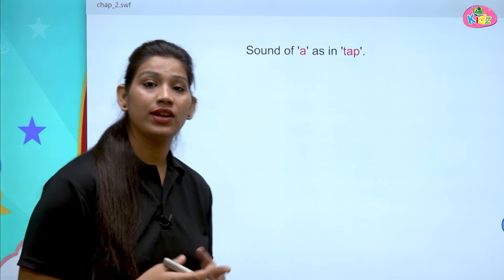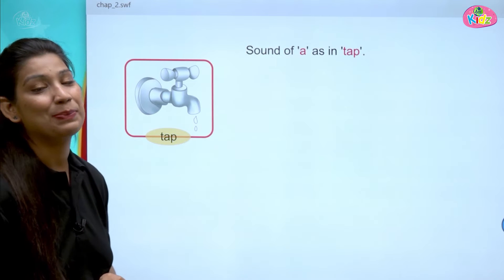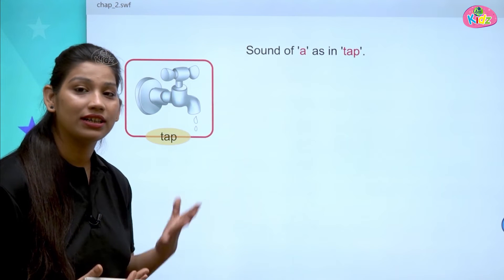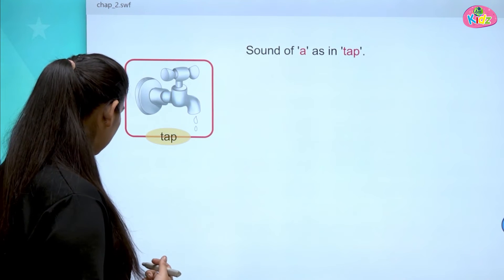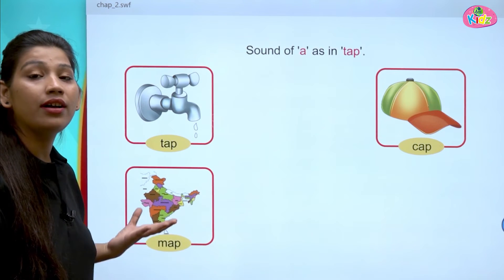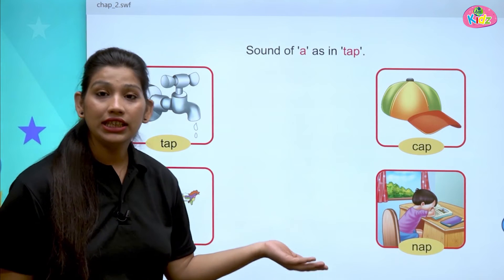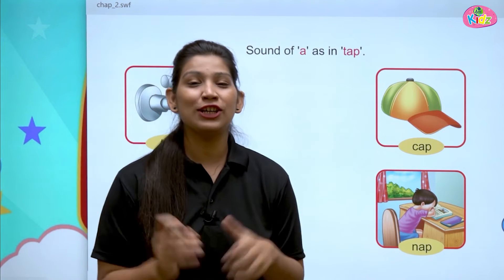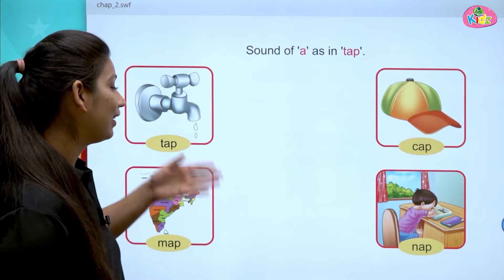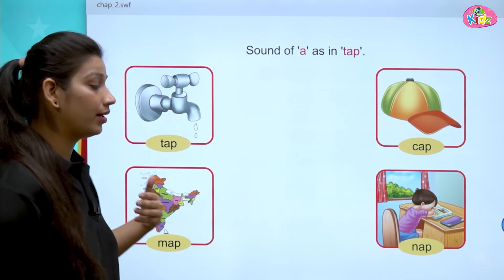Let us move ahead with a different sound with A — the AP sound. Here you can see the picture of Tap. T, A, P — Tap. T says T, A says A, P says P. T, A, P collectively becomes Tap. Next picture you can see: K, A, P — Cap. M, A, P — Map. Next you can see N, A, P — Nap. Here you can see all of the words are ending with the AP sound: Tap, Cap, Map, Nap.